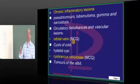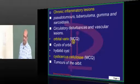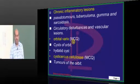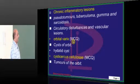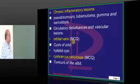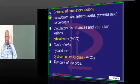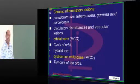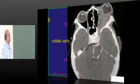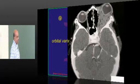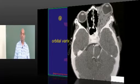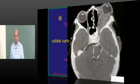Intermittent proptosis — you need to remember orbital varices. Similarly, cysticercus cellulosae can affect the eyeball and can also lead to the development of proptosis.